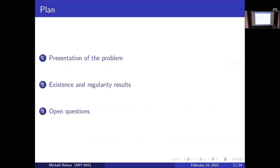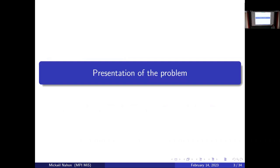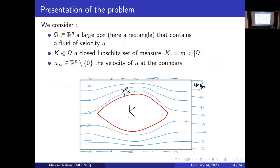The setting is as follows. Omega is a rectangle, a black rectangle, in which I have a fluid represented by flow lines in blue. Inside the box I have an obstacle K that for now is a Lipschitz set, but later it will not be regular. It is important that I have a fixed measure constraint on K.